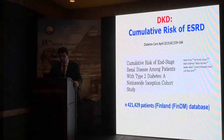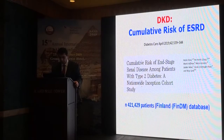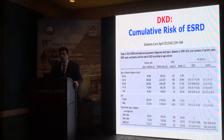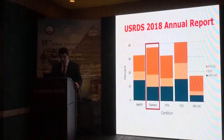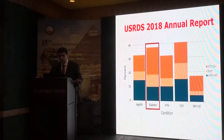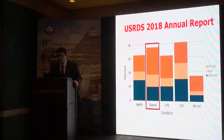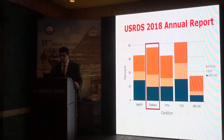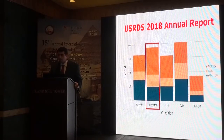Another study for type 2 diabetes examined the cumulative risk of end-stage kidney disease in a nationwide inspection cohort study. When patients have type 2 diabetes with end-stage kidney disease, the hazard risk is markedly increased. When diabetes is combined with reduced GFR, it represents about 10% of the population. With microalbuminuria or macroalbuminuria, it represents about 20%, and with both factors together, an additional 10%. So in total, about 40% of diabetic patients have chronic kidney disease due to one or both factors.